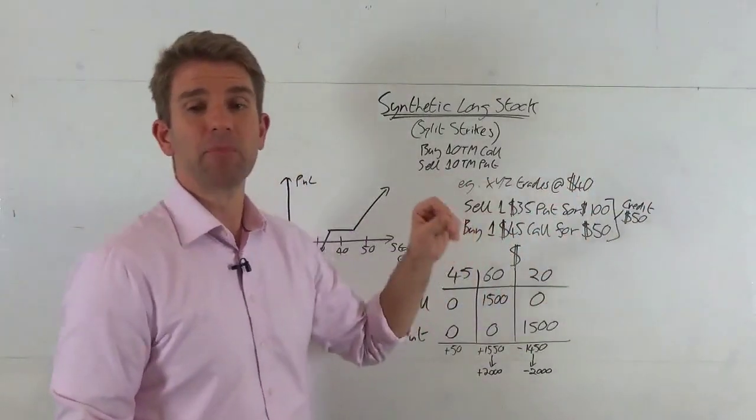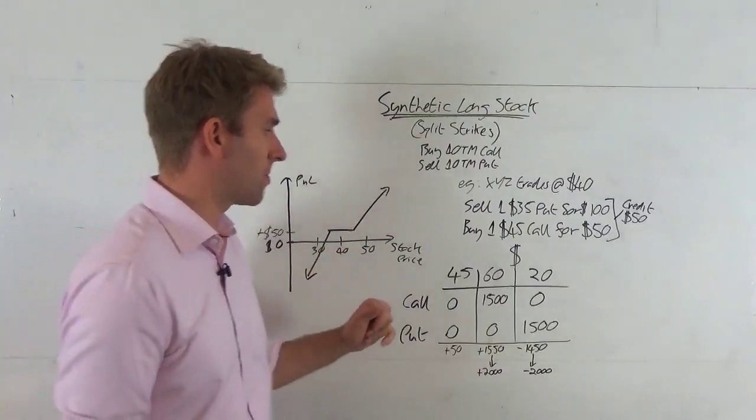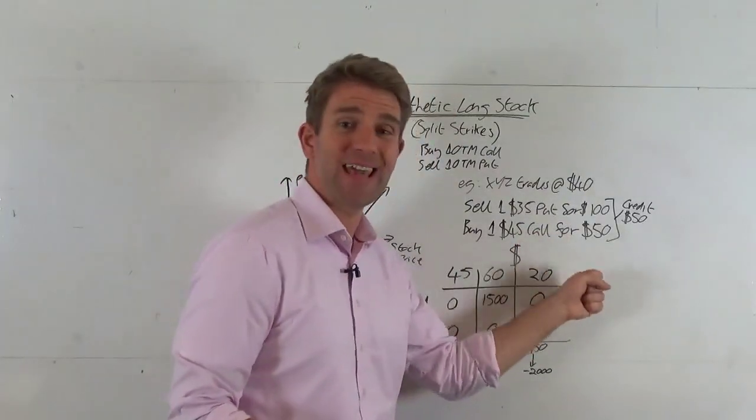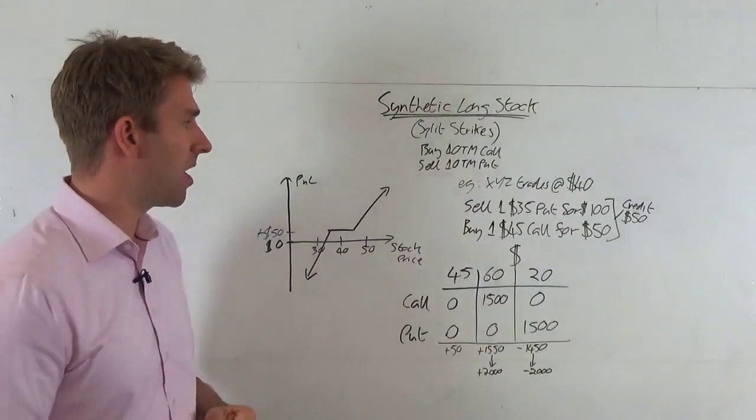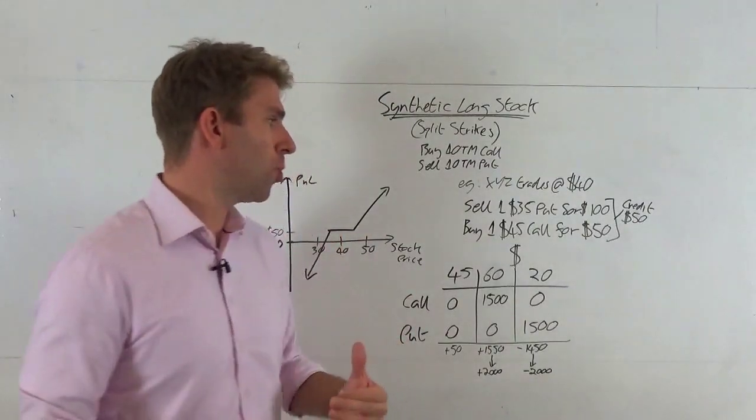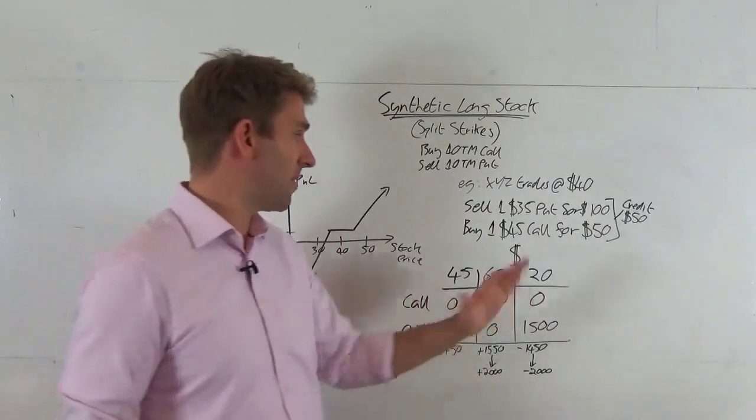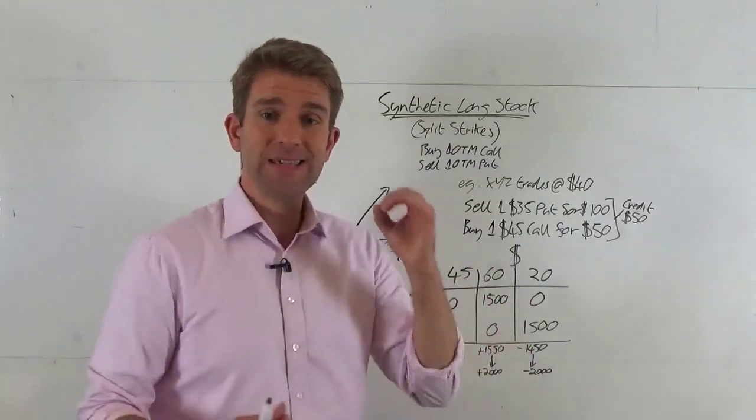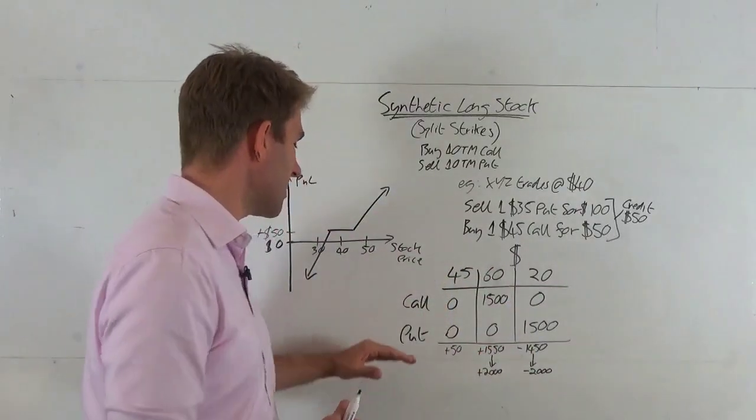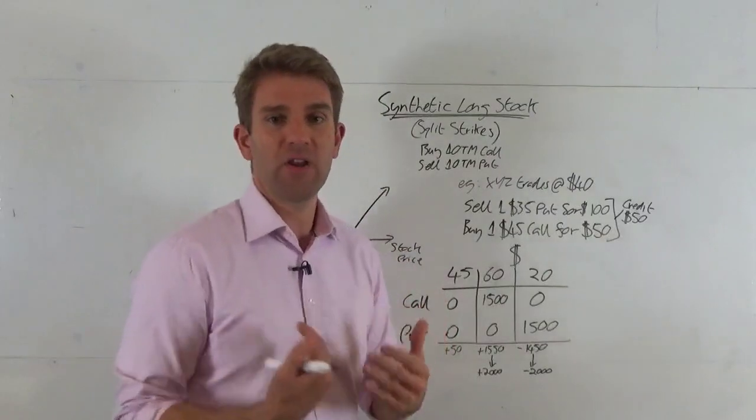But let's have a look and see the advantage that we get by having the synthetic long stock position with a split strike if it goes against us, i.e. goes down to 20 bucks at expiry. So 20 bucks at expiry, what's the call worth? The call is worthless, it's the right to buy something at 45 that's currently 20.